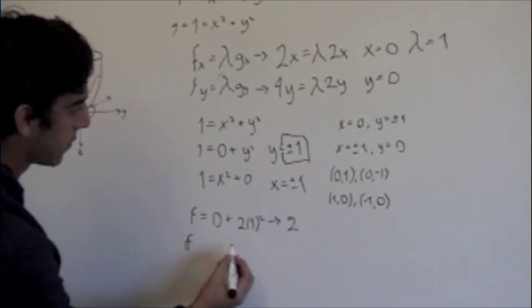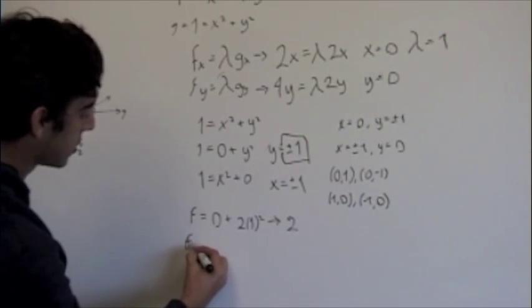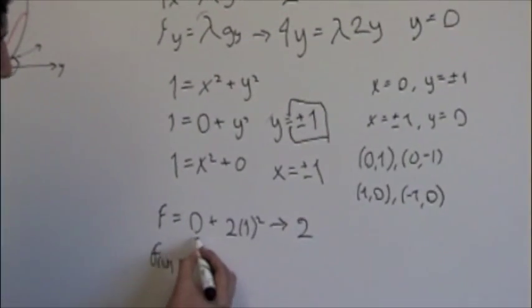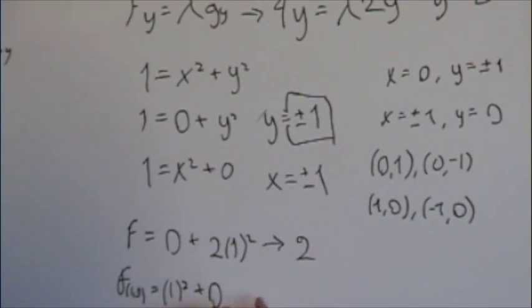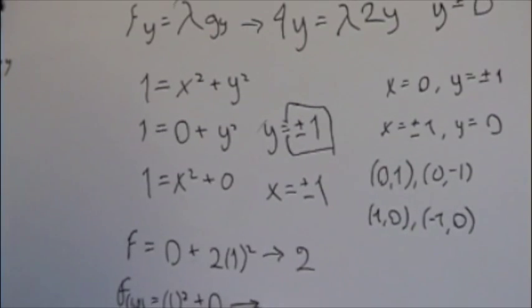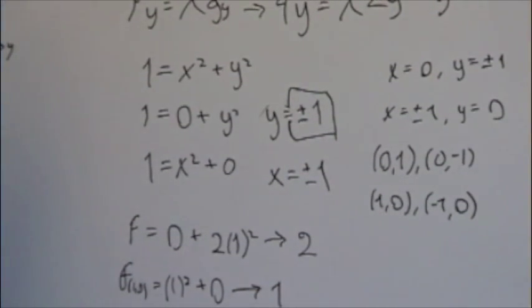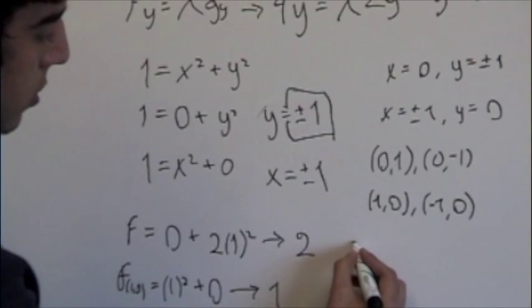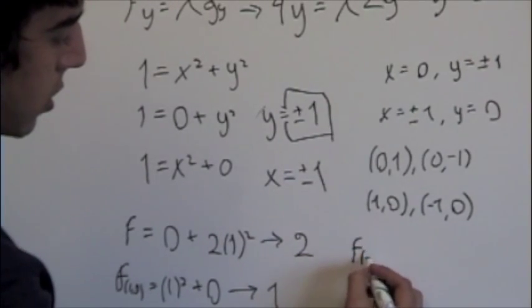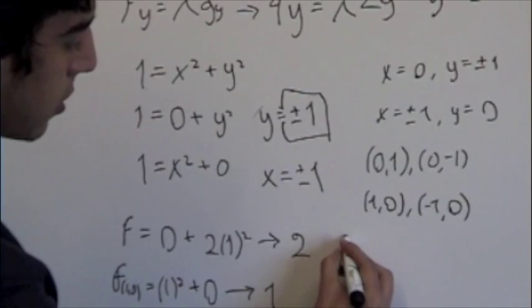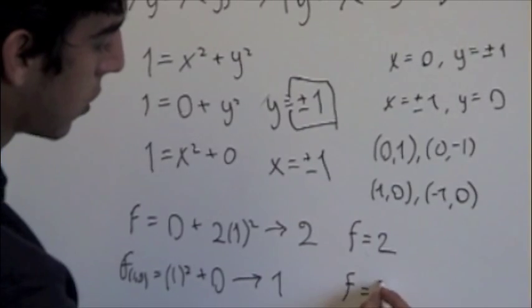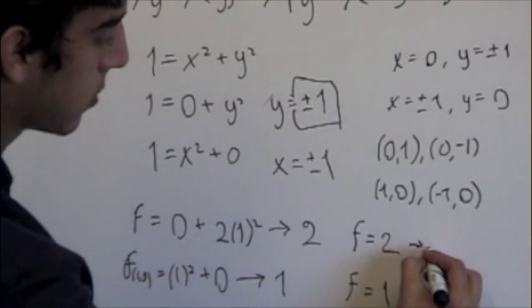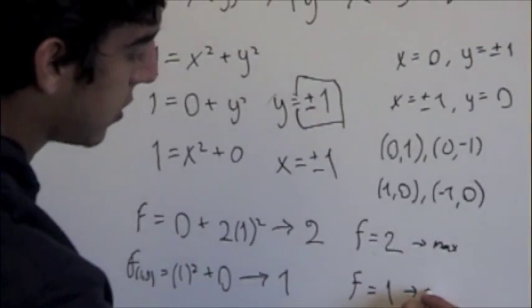For f(1,0), we'll get x², which is 1 or -1 again, so it's just 1² plus 0 because y is 0, which gives us 1. So our local max and min will be f = 2 and f = 1. These are max and these are min.